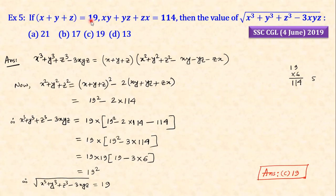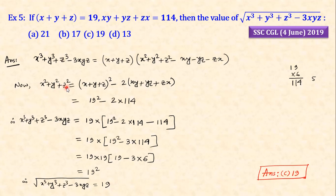Next question: if x plus y plus z equals 19 and xy plus yz plus zx equals 114, then find the value. The formula for x³ plus y³ plus z³ involves x plus y plus z into x² plus y² plus z², and we apply the identity: x² plus y² plus z² equals (x plus y plus z)² minus 2(xy plus yz plus zx). Substituting 19 and 114, the value is 145.